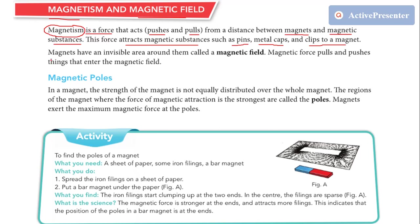Also, the magnets have an invisible area around them called a magnetic field. If any object enters that magnetic field, that magnetic field will exert a magnetic force on that. So that magnetic force is either a pulling force or pushing force. So if any iron, nickel, or cobalt object enters this magnetic field, that magnetic field will exert a magnetic force on that, meaning it will either attract or repel it.